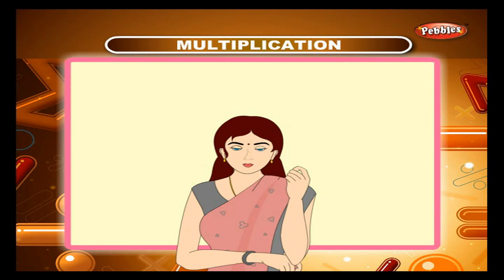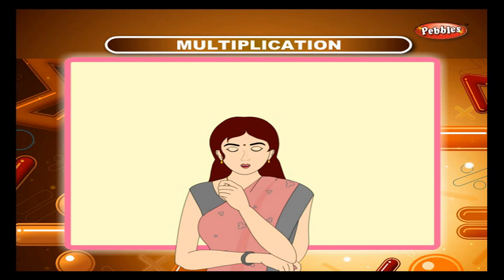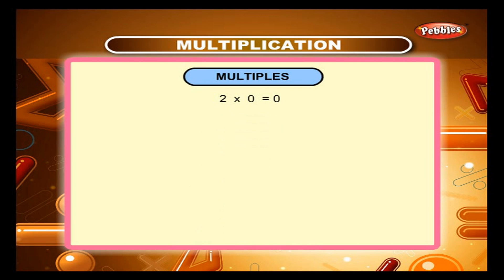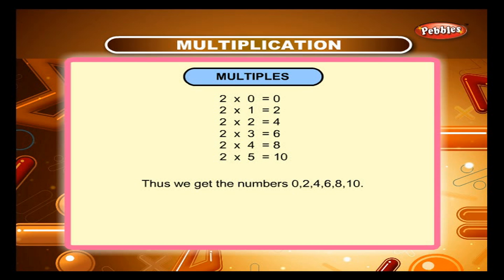Multiples. The product of 2 whole numbers is a multiple of each factor. 2 into 0 is 0, 2 into 1 is 2, 2 into 2 is 4, 2 into 3 is 6, 2 into 4 is 8, 2 into 5 is 10. Thus we get the numbers 0, 2, 4, 6, 8, 10.